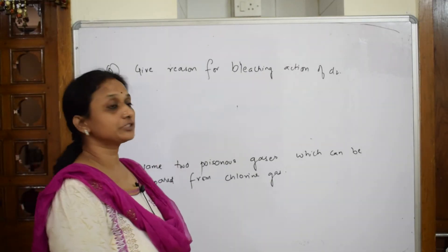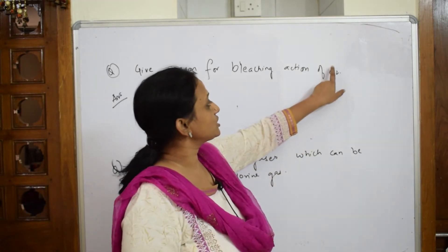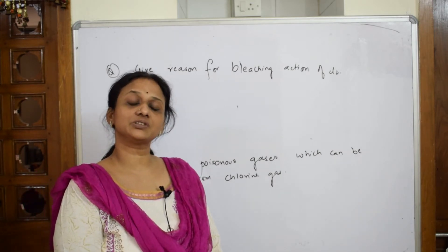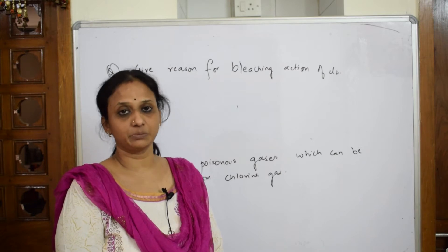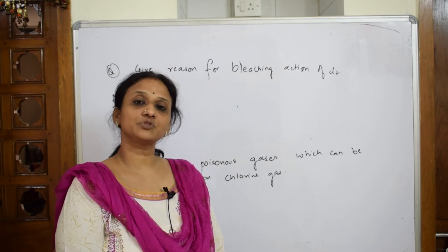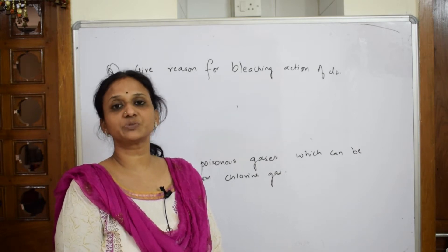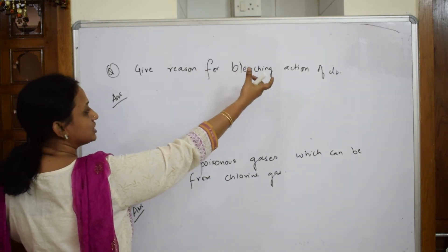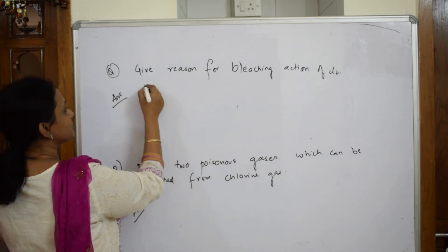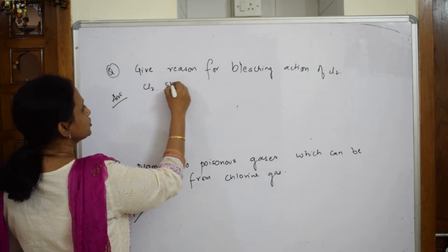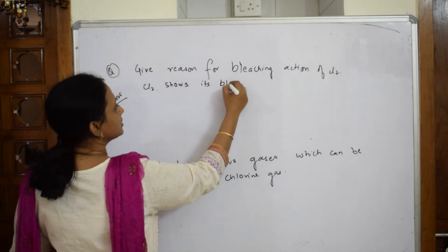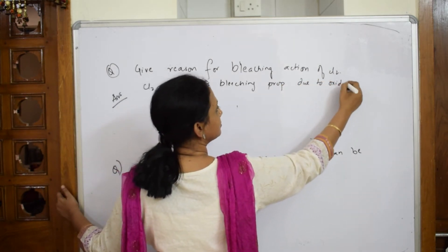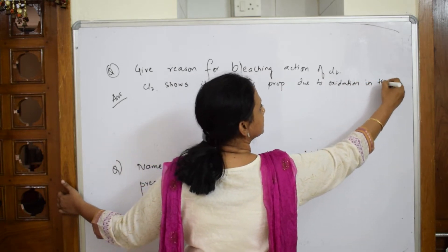Let's come back and see the bleaching action of chlorine — a quite common exam question. Chlorine bleaches due to oxidation. Let us write the answer in the form of a reaction. Chlorine shows its bleaching property due to oxidation in the presence of moisture.